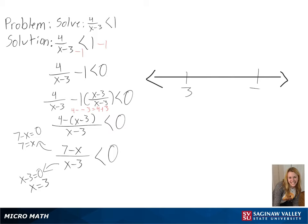A number we can use to the left of 3 is 0, and plugging that in, we will get a positive over a negative, or a negative number.